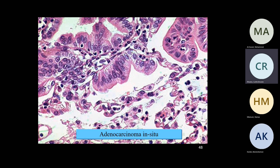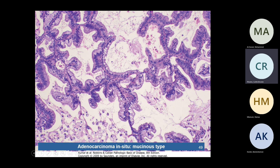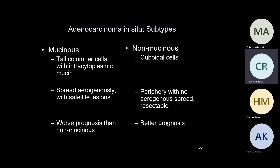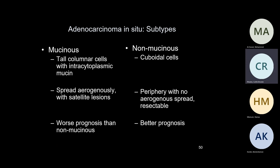Lepidic growth pattern or adenocarcinoma in situ has two distinguished pathologies: mucinous type and non-mucinous type. This is a non-mucinous type — columnar cells lining the alveolar septa. The mucinous type has mucin-like clearing in the cytoplasm. Why is this important? Because the mucinous type is much worse than non-mucinous type. Mucinous type is very rare. The reason is it spreads from one airspace to another, making it hard to get clear margins — you'll have widespread disease. Remember the definition: if more than 3 centimeters, you call it adenocarcinoma with lepidic growth pattern, not adenocarcinoma in situ.